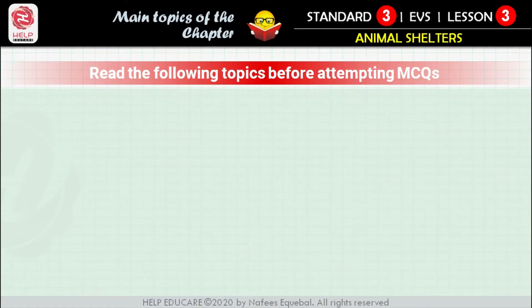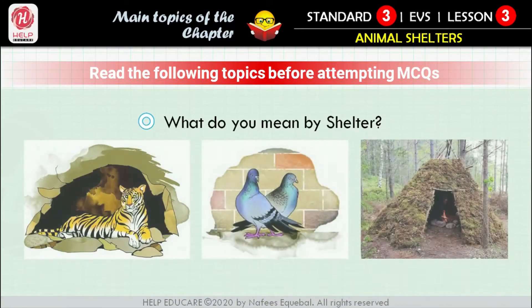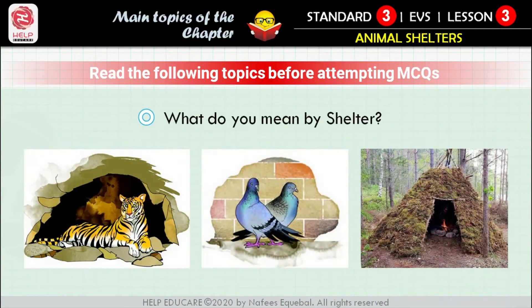What do you mean by shelter? A shelter is a safe place where one is protected from any danger — a place where one is protected from the sun, rain, wind, etc.